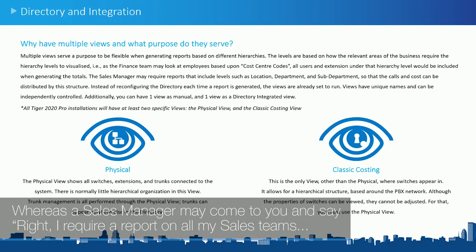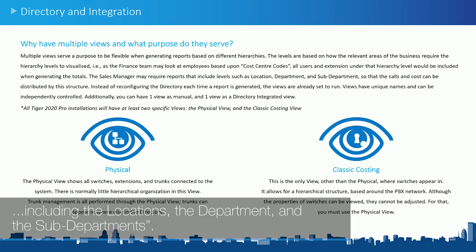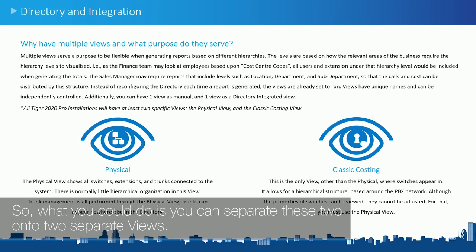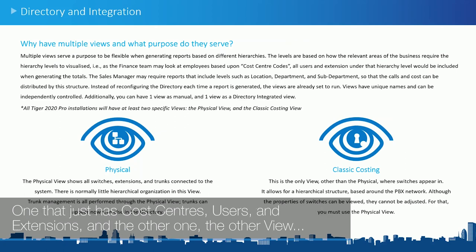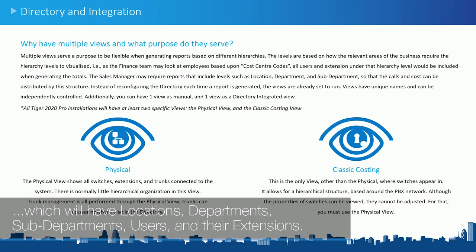Whereas a sales manager may come to you and say they require a report on all their sales teams, including the locations, the department, and the sub-departments. So you could separate these two onto two separate views — one that just has cost centers, users, and extensions, and the other view which will have locations, departments, sub-departments, users, and their extensions.